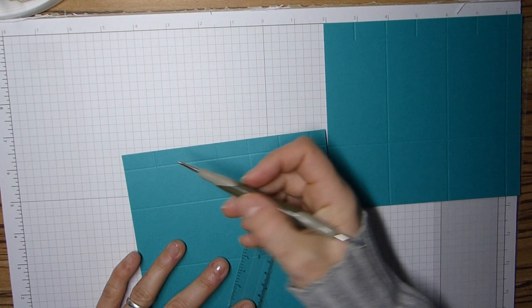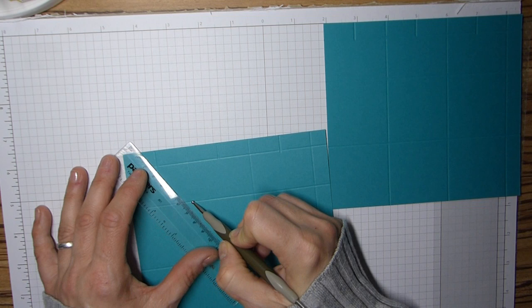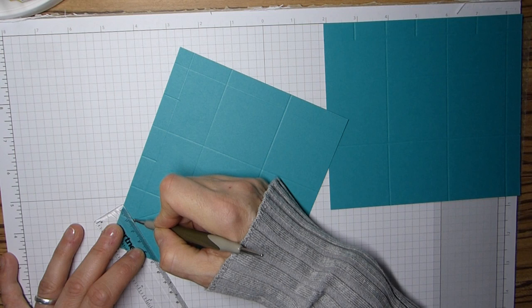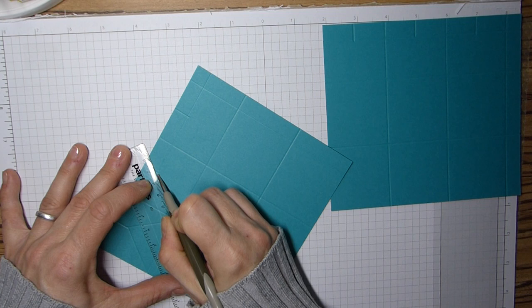Now we've got to go back in with the ruler and where we've made those marks across the top, we're going to use those points and score our triangles. We're going to do that on both pieces on all three sections.